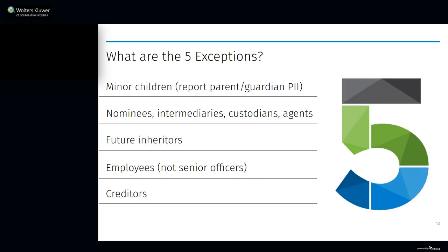There are, however, five exceptions. The term beneficial owner does not include: a minor child — though the reporting company must provide required information of the parent or legal guardian; an individual acting as a nominee, intermediary, custodian, or agent on behalf of another individual; an individual whose only interest in the reporting company is a future interest through a right of inheritance; an employee of the reporting company acting solely as an employee, provided the individual is not a senior officer; and a creditor of the reporting company.